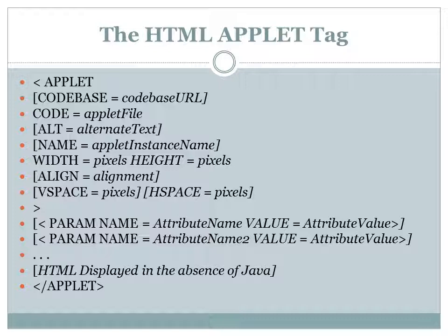The next important topic is the HTML applet tag. We have already seen this tag, but it has many important attributes. Some attributes are optional and some are required. The required attributes are code, width, and height — these three must be present in every applet program. The remaining attributes are optional, and we will see each of them in detail.